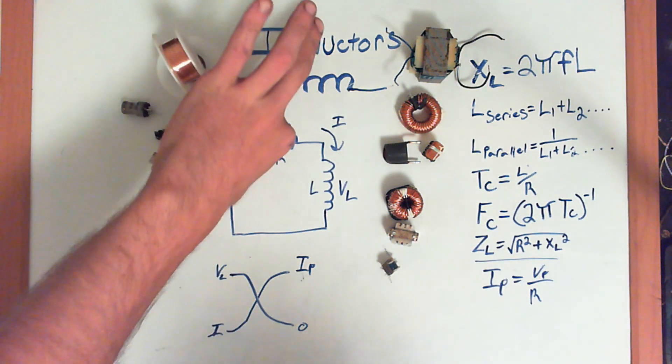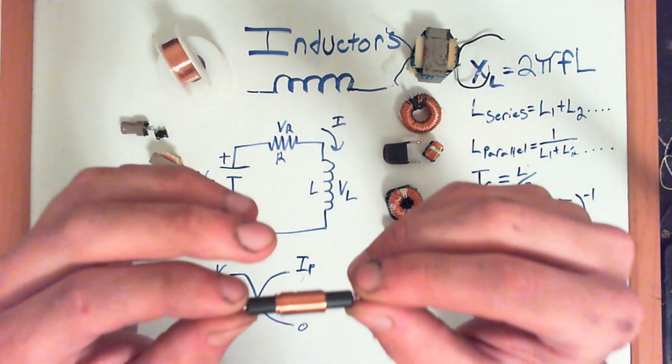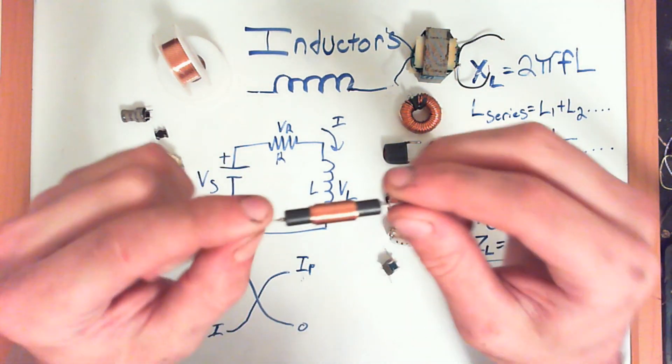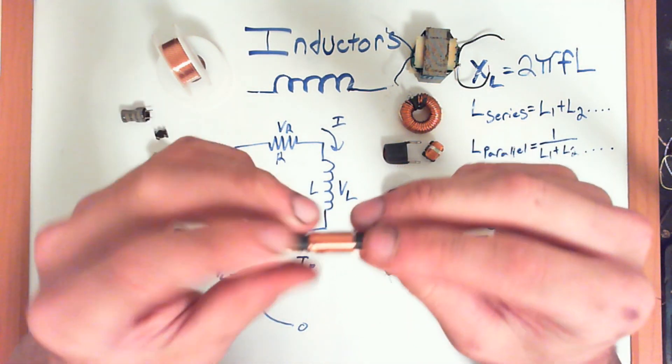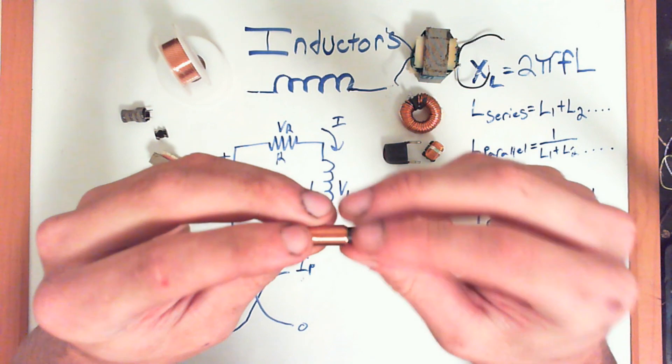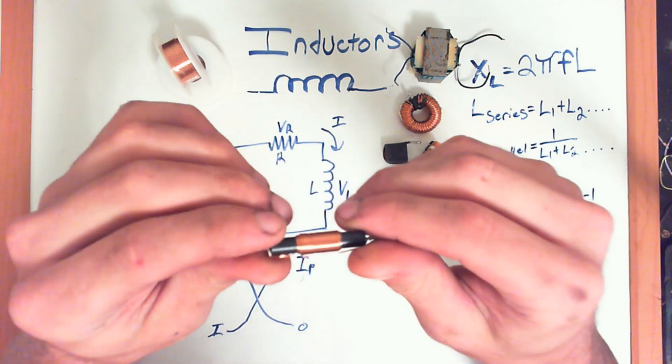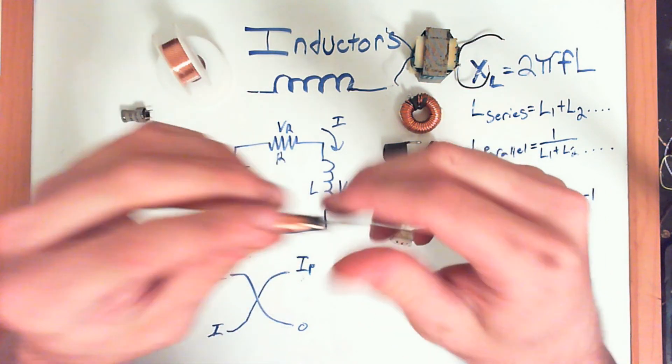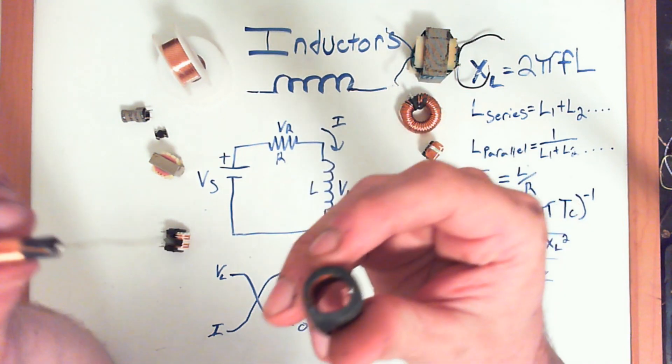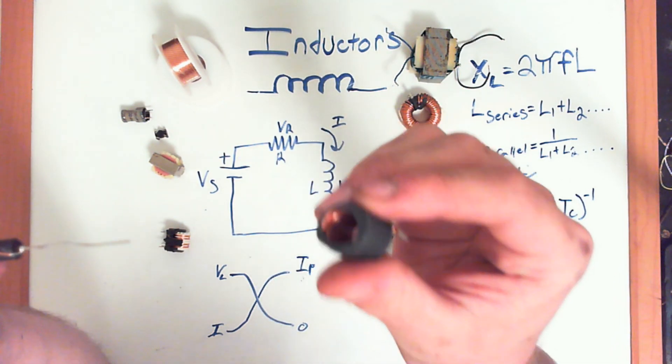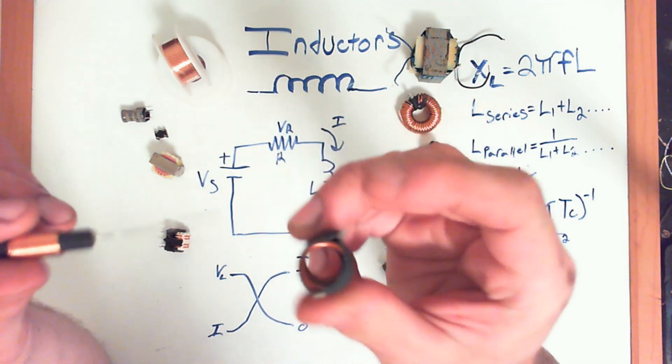An inductor simply is a piece of conducting material wrapped around, or wrapped into a neat little coil. It doesn't necessarily have to be wrapped around anything. For instance, the air inductor is just a coil of wire wrapped up.